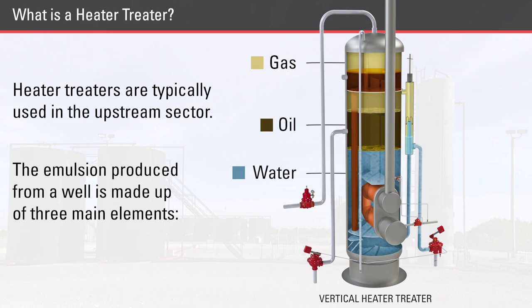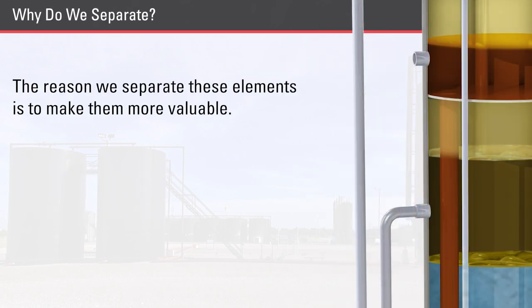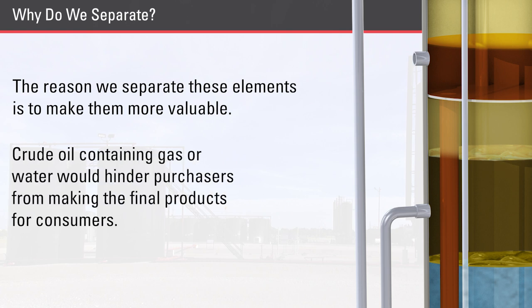The reason we separate these elements is to make them more valuable. The main goal is to make a natural resource more attractive to the buyer. Purchasers of crude oil don't want there to be any gas and water in the oil they are buying, as that would hinder them from making the final product that consumers need.